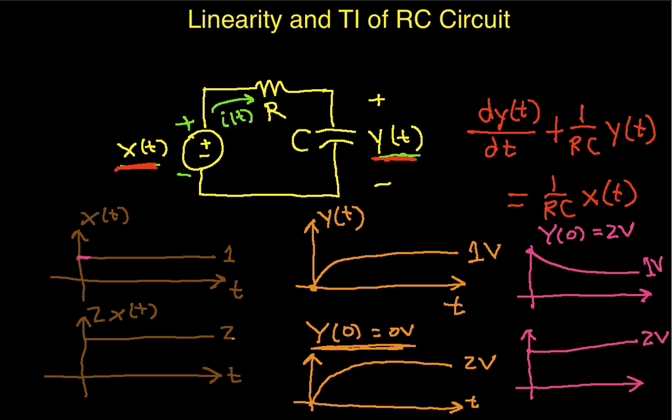So what you can see is, in this case, my system acts like it's linear, or at least it acts like it satisfies homogeneity. Because when I put 1 volt in, I get this increasing exponential that goes to a steady state of 1 volt. When I multiply that by 2 and put 2 volts in, I get an increasing exponential that starts at 0 and goes up to 2 volts. So indeed, I have that homogeneity holds.